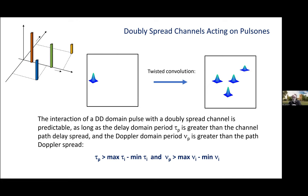So, the action of a doubly spread wireless channel on time domain pulsones is very simple. For example, the effect of a channel path delay is simply to shift the pulse along the delay axis by an amount equal to the path delay.